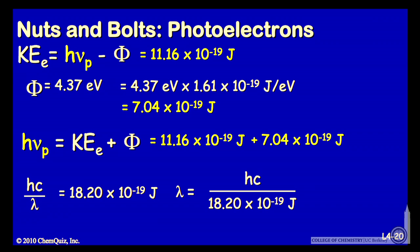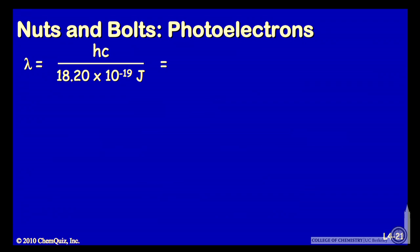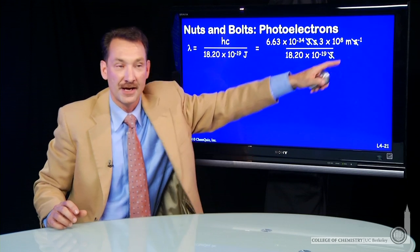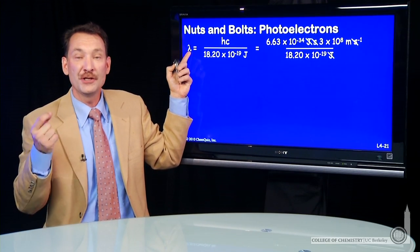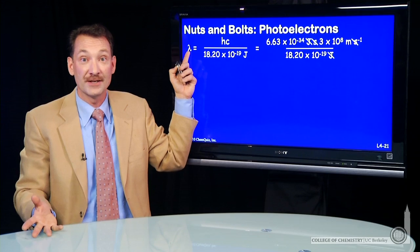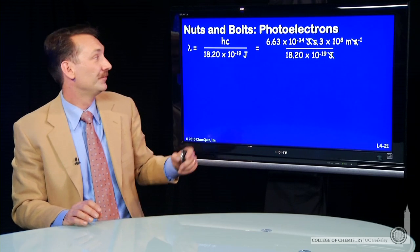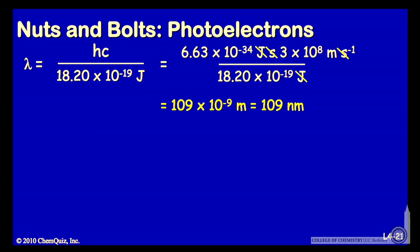Of course, we can solve for the wavelength now. That's just hc over 18.20 times 10 to the minus 19 joules. And we can do that math. This number, plug in Planck's constant and the speed of light in joules per second and meters per second. And then we'll notice that the units of joules will cancel out, and the units of seconds will cancel out, and leave us units of meters. And that's what we want. It's always good to check. Do the units that we have left make sense for the quantity that we're solving for? We're solving for wavelength, a length. Do I have meters? In this case, I do. So I have, doing the math, 109 times 10 to the minus 19 meters. Excuse me, 109 times 10 to the minus 9 meters. That's a nanometer.